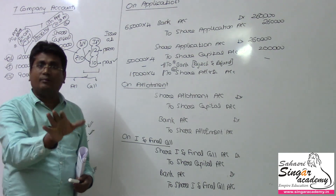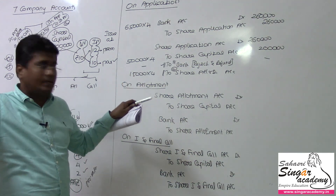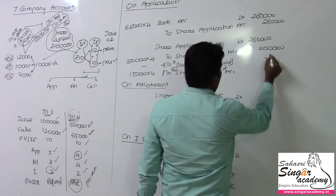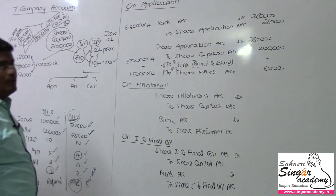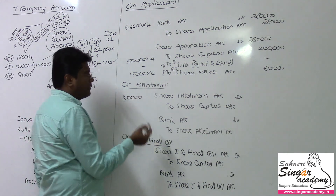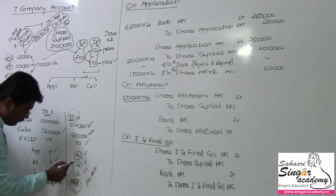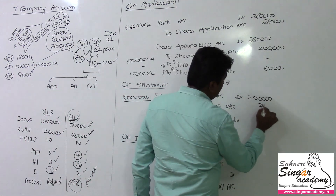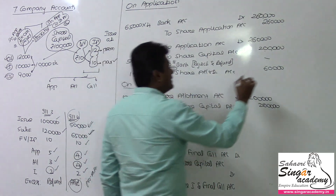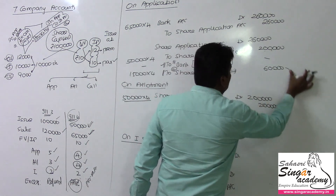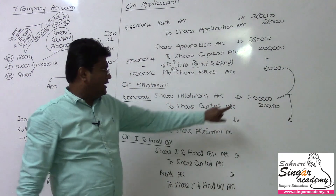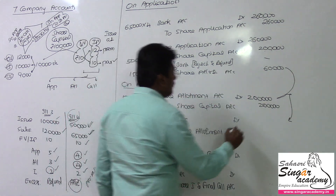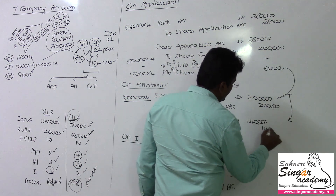The excess 15,000 shares × 4 rupees = 60,000 rupees will go toward the allotment adjustment. The allotment due is 50,000 shares × 4 rupees = 2,00,000 rupees. Since 60,000 has already been received via excess application money, you have to pay only 1,40,000 rupees as fresh allotment money. The bank account will reflect this balance.